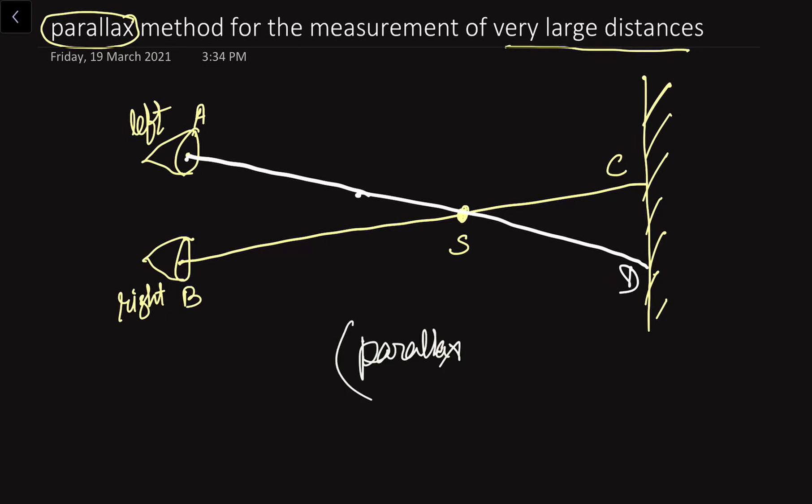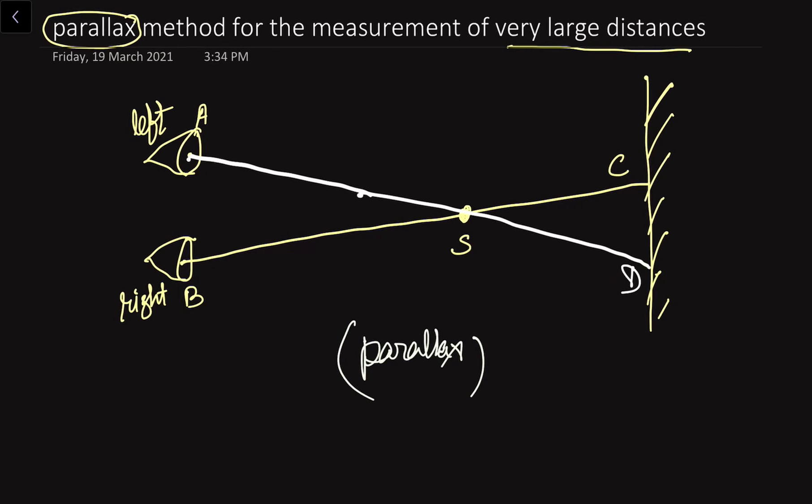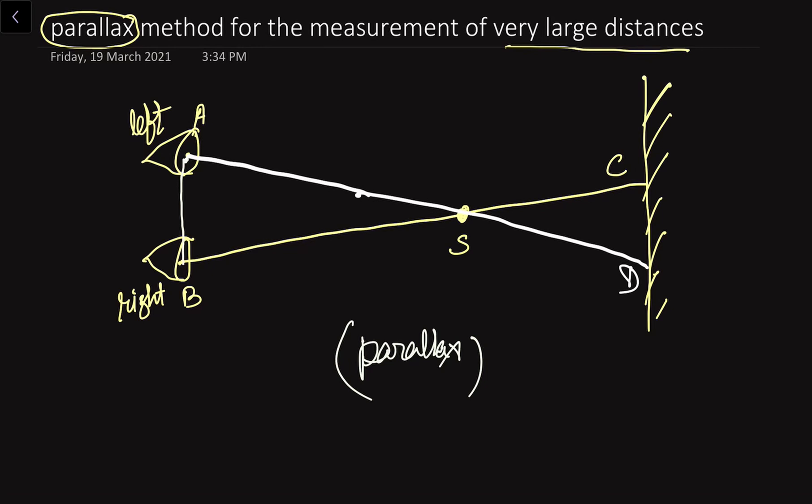This parallax happens because of the distance between the two eyes — there is a certain distance from point A to point B. Using this method, we can calculate very large distances. This method is especially used to calculate the distance of a star or a planet from the Earth, such as the distance between the Earth's surface and the Moon, or between the Sun and the Earth's surface.